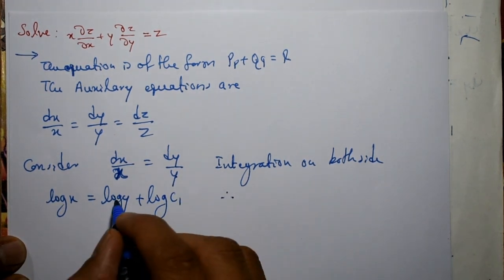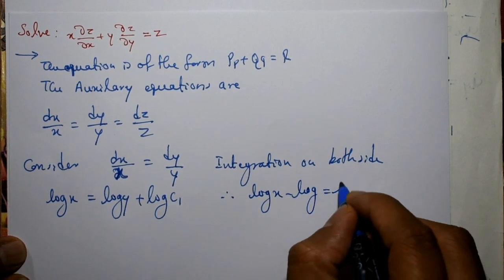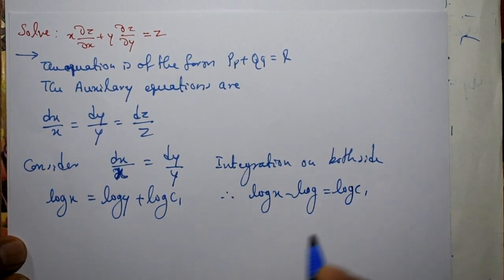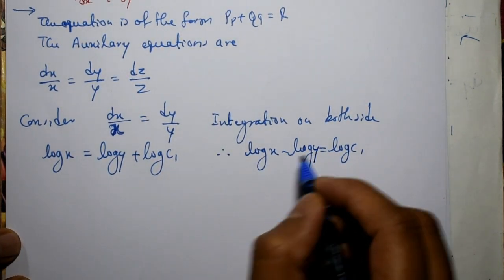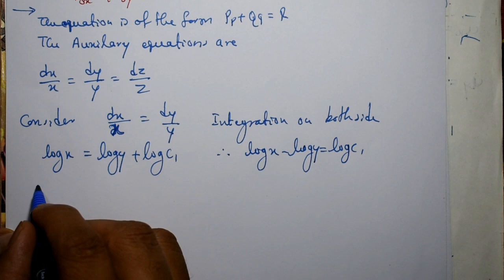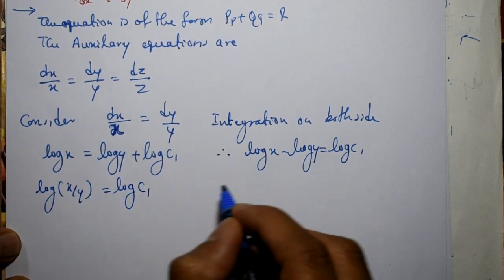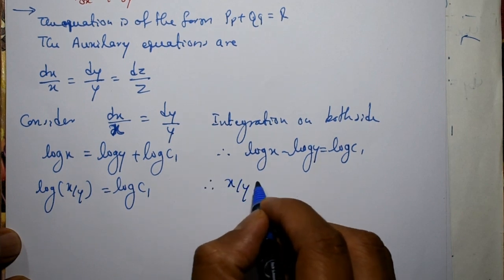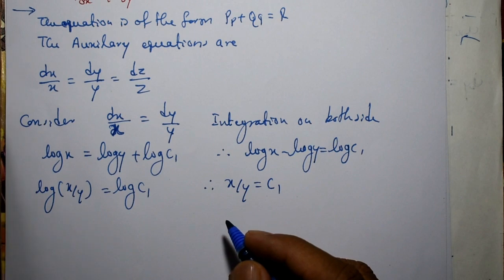And therefore shift to this left hand side, that is log x minus log y equal to log c₁. Now log x minus log y, using log property, that is log(x/y) equal to log c₁. Therefore x/y equal to c₁.